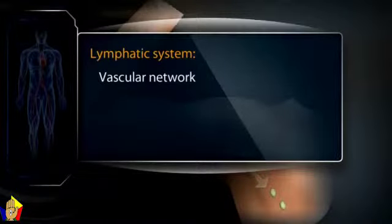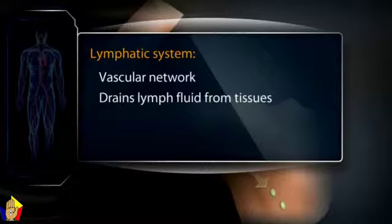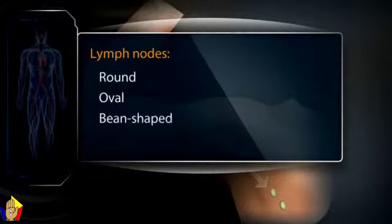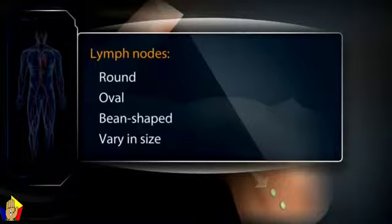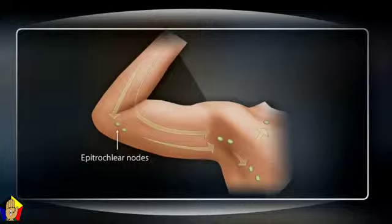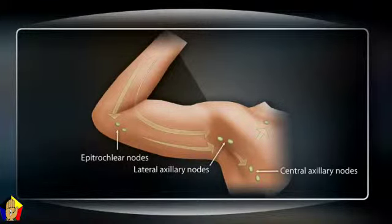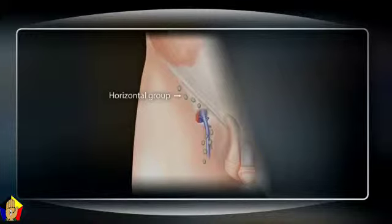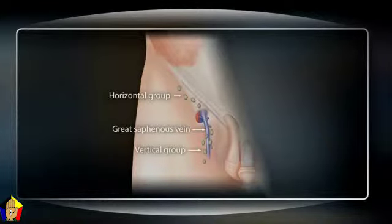The lymphatic system is an extensive vascular network that drains lymph fluid from body tissues and returns it to the venous circulation. Lymph nodes are round, oval, or bean-shaped structures that vary in size by location. Only superficial lymph nodes are accessible to physical examination. In the arms, these include the epitrochlear nodes, lateral axillary nodes, and central axillary nodes; the infraclavicular nodes may also be palpable. In the legs, usually only the superficial inguinal nodes are palpable — the horizontal group lies in a chain high in the anterior thigh below the inguinal ligament, and the vertical group clusters over the upper part of the great saphenous vein.